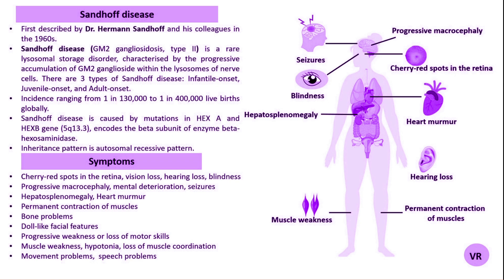The HexB gene is located on chromosome 5 at the Q23.3 band, consists of 14 exons and is 45 kilobases in length. It encodes the beta subunit of the beta-hexosaminidase enzyme, which is essential for breaking down complex sugars and fatty substances called sphingolipids within cell lysosomes. The HexB gene is critical for the function of beta-hexosaminidase A, with one beta and one alpha subunit, and beta-hexosaminidase B, with two beta subunits.